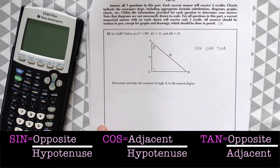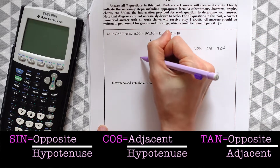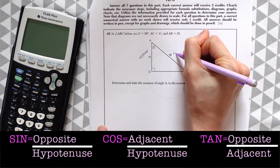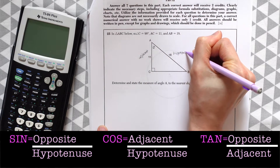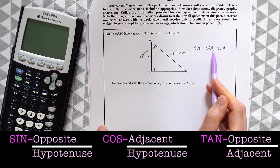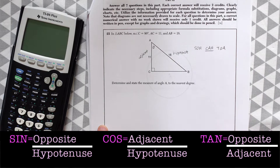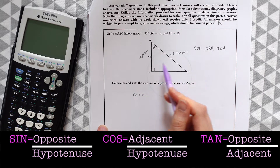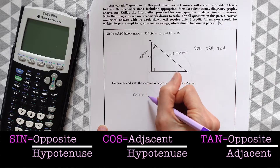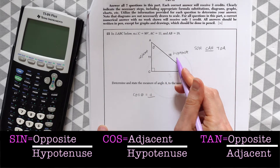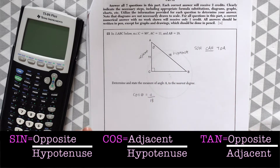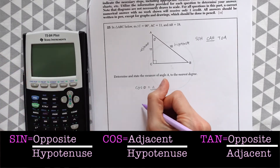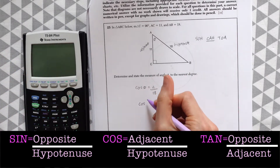So in relation to angle A, we have the adjacent and we have the hypotenuse value. So adjacent and hypotenuse means we know we're going to be using cosine. So cosine of theta is equal to the adjacent, 11, over the hypotenuse, 18. To get the angle when we don't know it, we're going to plug this into our calculator.